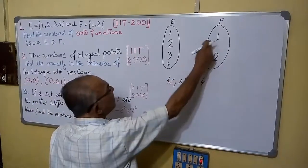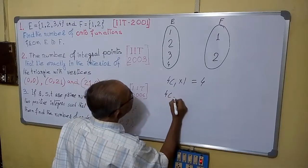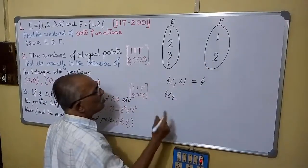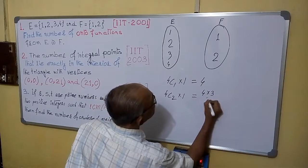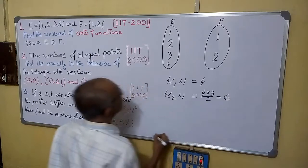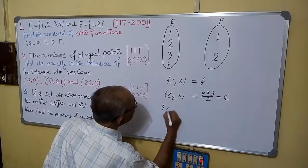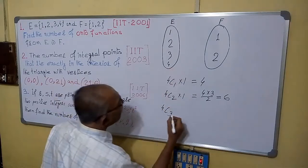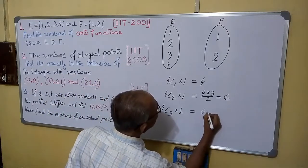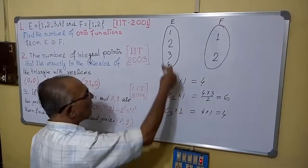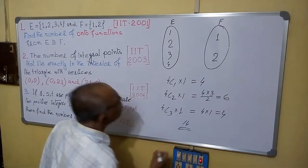Now we can think 1 is associated with 2 of the numbers. So 2 we can choose in 4C2 ways. The remaining 2 will be obviously associated with 2 and it can be done in 1 way. 4C2 equals to 4 into 3 by 2 equals to 6 ways. Now, 1 may be associated with 3 of these 4 elements. That can be done in 4C3 ways. And the remaining 1 will be associated with 2 and it can be done in only 1 way. So 4C3 is also 4. So total number of arrangements will be 4 plus 6 plus 4 equals to 14. So this will be your answer.